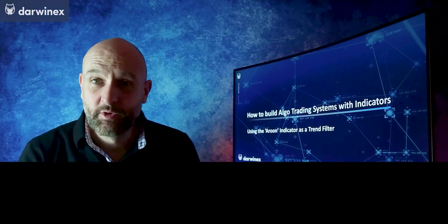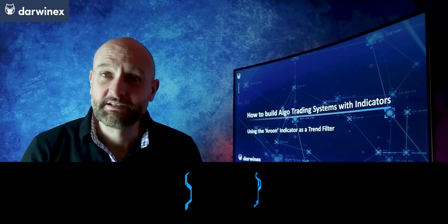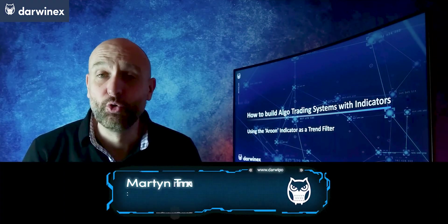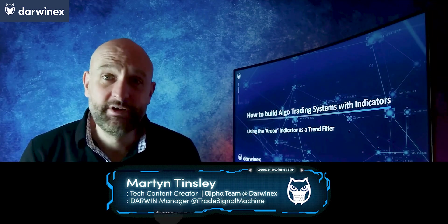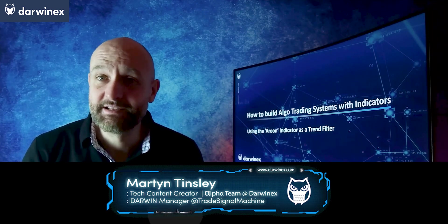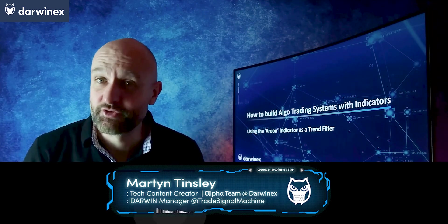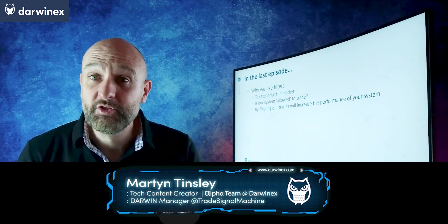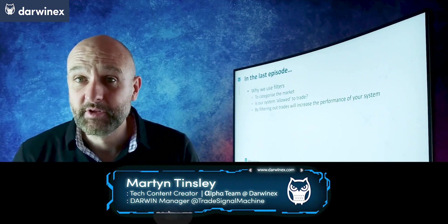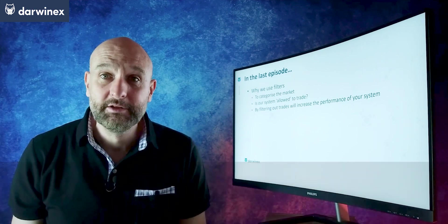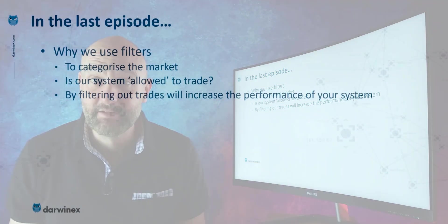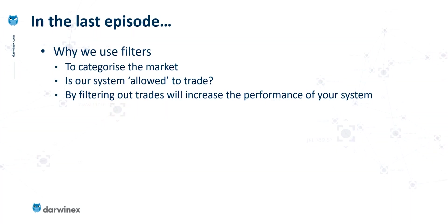The indicator we'll be looking at today is called the Aroon indicator, and this is a really great example of a trend filter. This follows on nicely from the last episode where we looked at what a trend filter is and how we should use those trend filters.